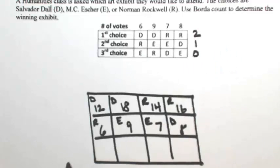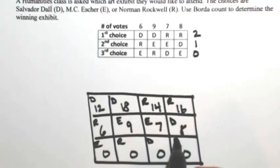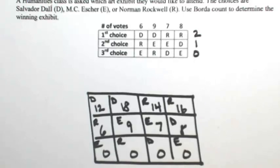Then everyone in the last row is going to get nothing. So E, R, D, and E, because all of those votes are worth zero points.